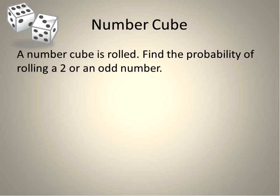The last question we're going to do is using a number cube. A number cube is rolled once. Find the probability of rolling a 2 or an odd number. So I'm going to calculate both of those. The probability of rolling a 2 is 1 out of 6. One out of the 6 options on the number cube is a 2.